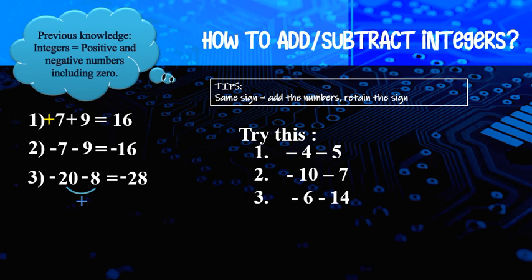Number 1: negative 4 minus 5 — same sign, we plus the number: 4 plus 5 equal to 9, retain the sign, so the answer is negative 9. Number 2: negative 10 minus 7 — negative, negative — same sign, so we plus the number: 10 plus 7 equal to 17, retain the sign — negative 17.